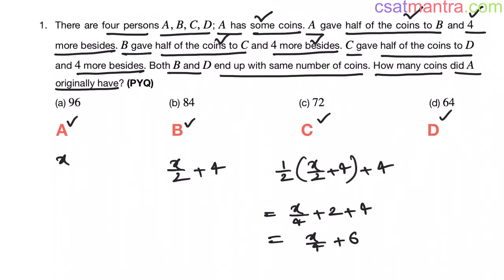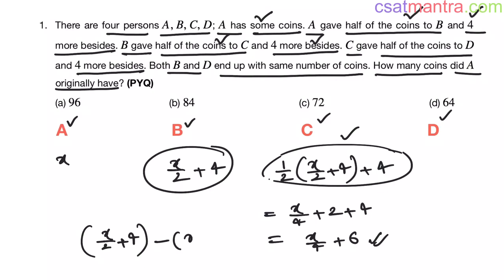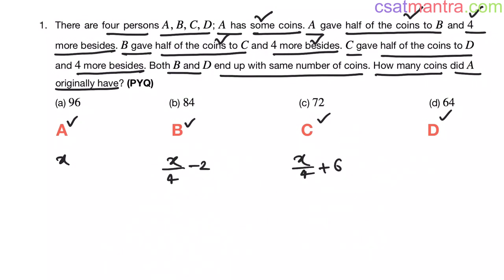Number of coins left with B my friends. He gave this much. Now he will be having this minus this. So X by 2 plus 4 minus this value, X by 4 plus 6. Now this is equal to X by 4 minus 2 my friends. 4 minus 6 is minus 2. X by 2 minus X by 4 is X by 4. Now B has X by 4 minus 2 and C has X by 4 plus 6 coins my friends.